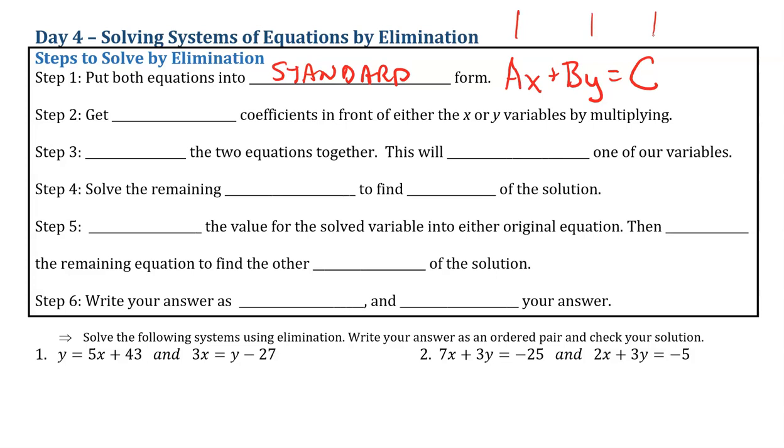The next thing we want to do is we want to get opposite coefficients in front of either the x or the y variables. And that may be requiring multiplication of one of the equations by some number. So for example, if I had 2x in one of the equations, I might want to have negative 2x in the other.